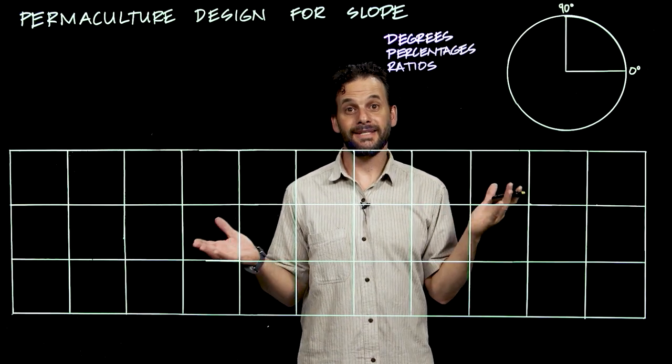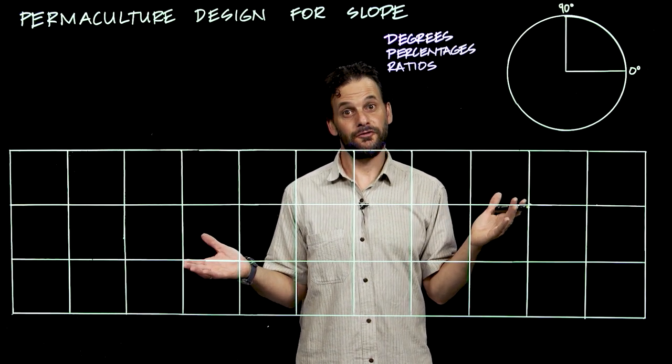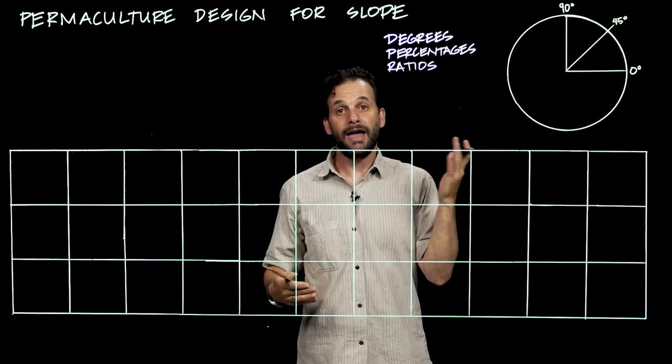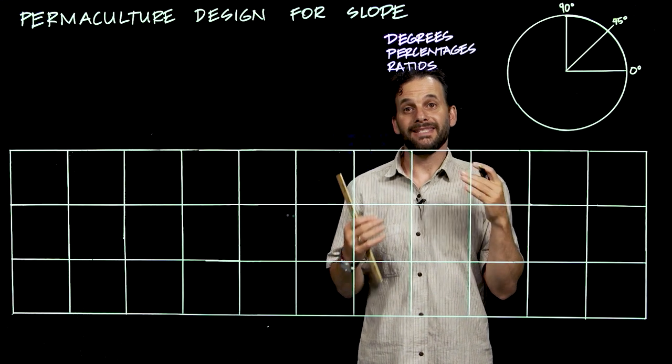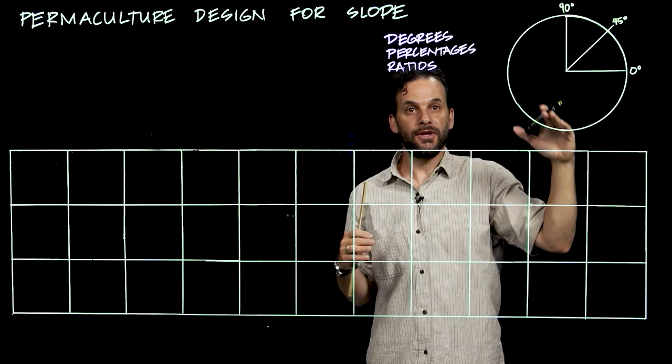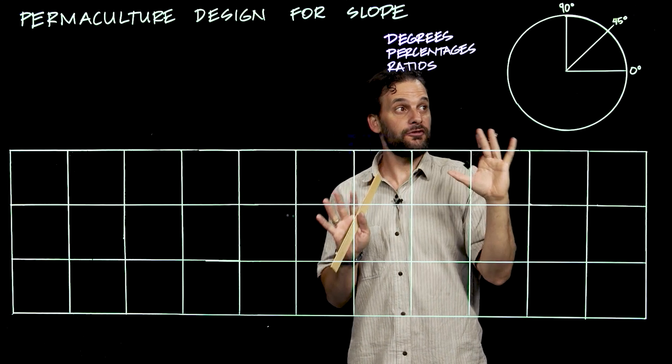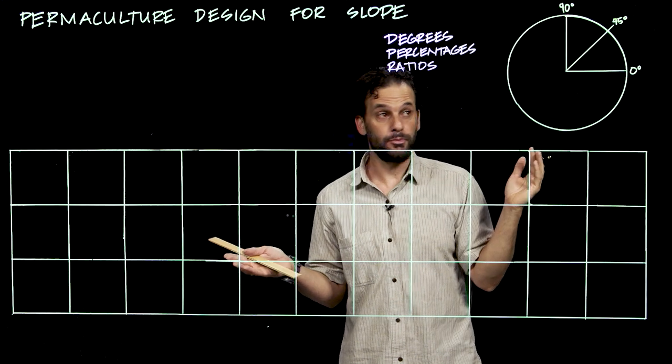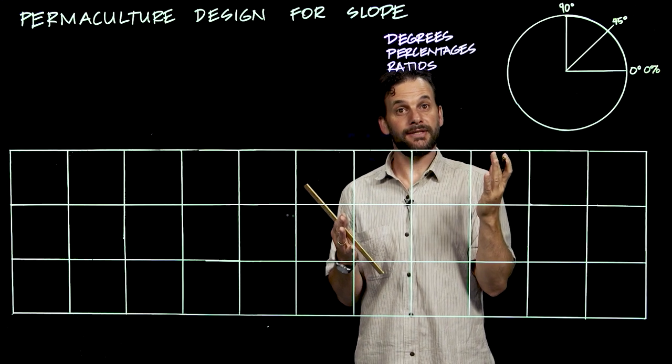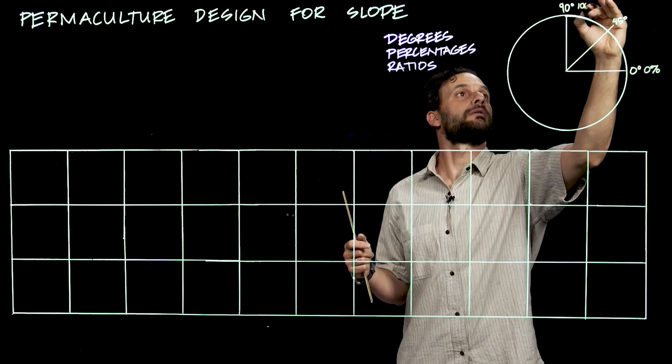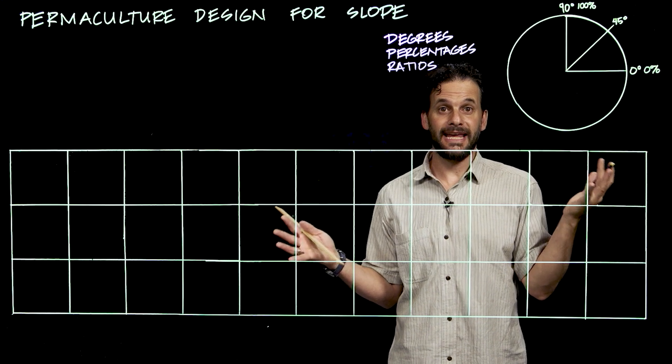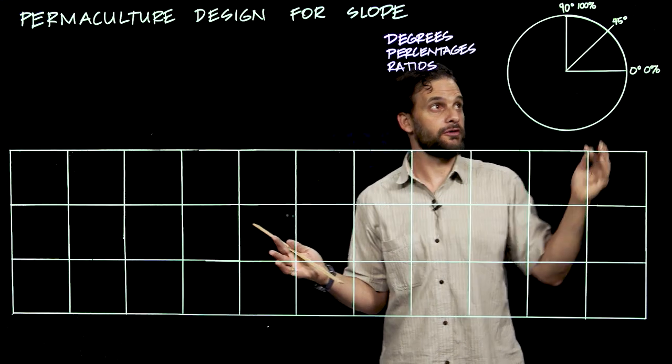A slope that bisects that is 45 degrees. That 45 degree slope represents an equal rise and an equal run. So, if a completely flat slope is 0%, and the straight up and down slope is 100%, then half of that is a 50% slope, which is the same thing as a 45 degree slope.